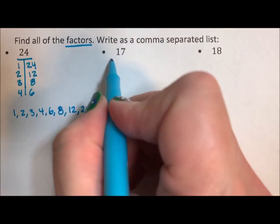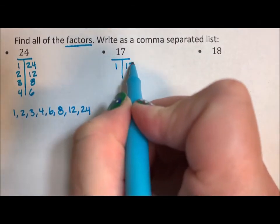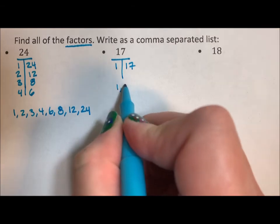Now 17 is prime, so my factors of 17 are just 1 and 17.